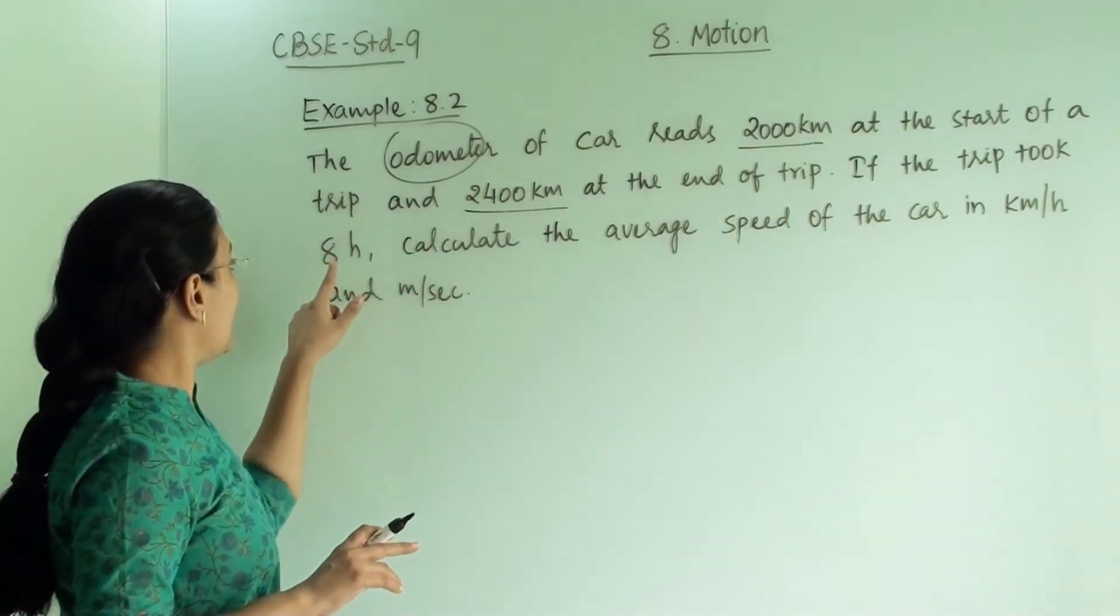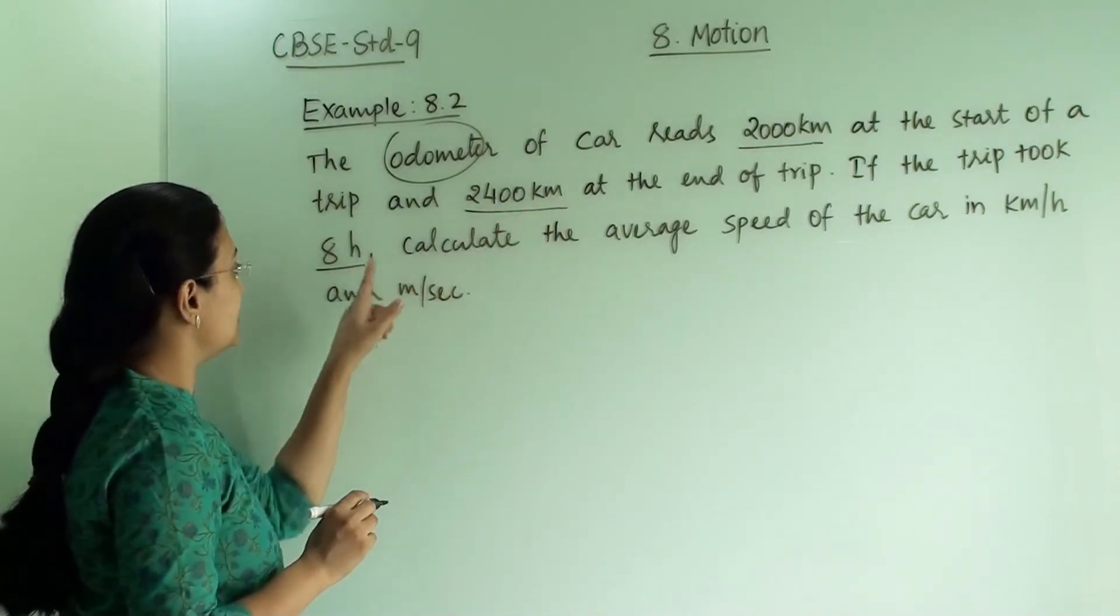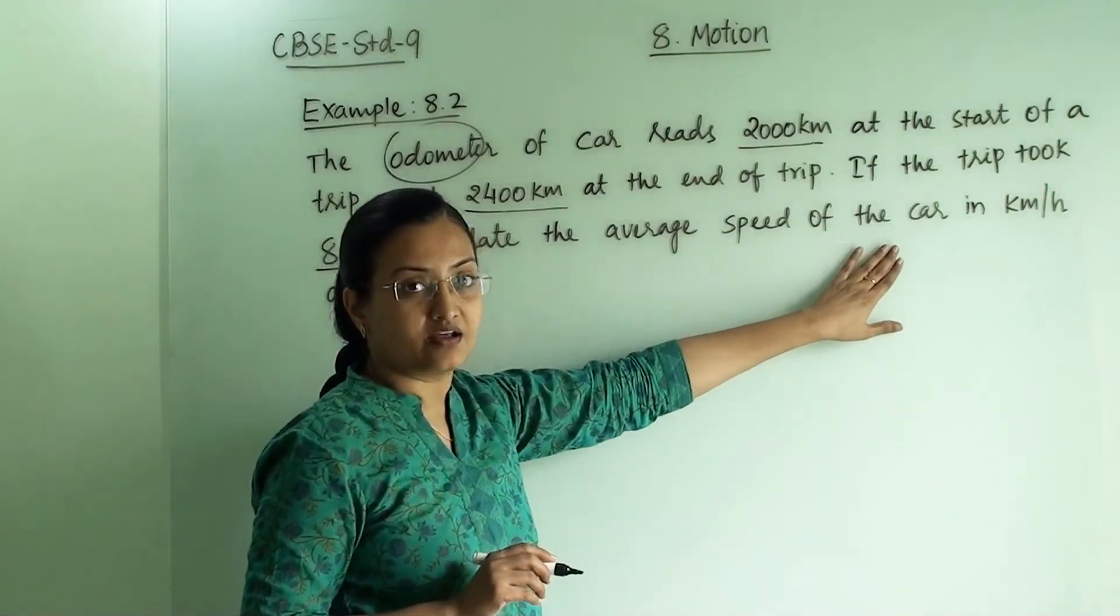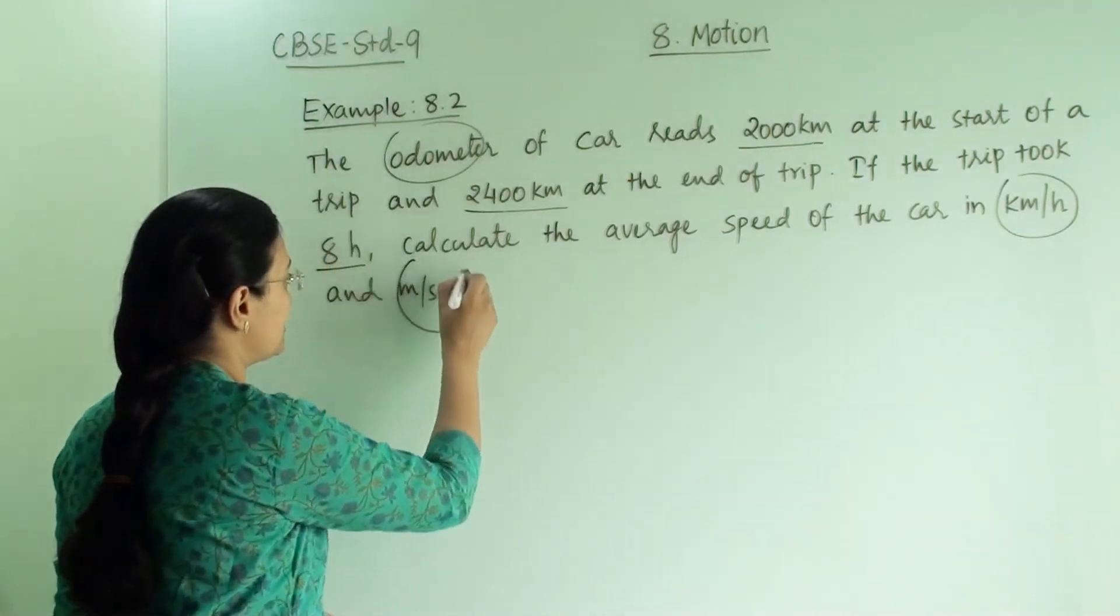If the trip took 8 hours, so this is time. This is distance and this is time. Calculate the average speed of the car in km per hour and in meter per second.